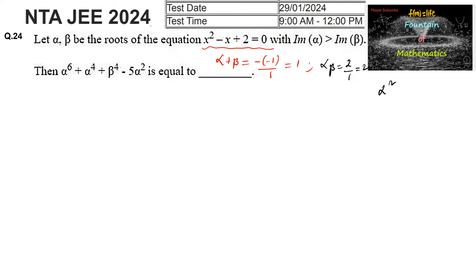Since alpha is a root, we can write alpha² - alpha + 2 = 0, which implies alpha² = alpha - 2. Similarly, since beta is also a root, we can write beta² = beta - 2.